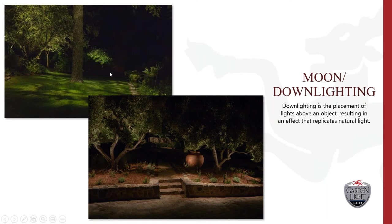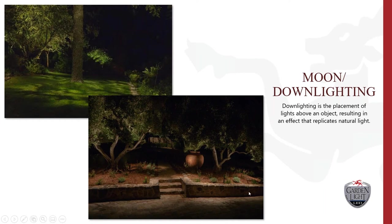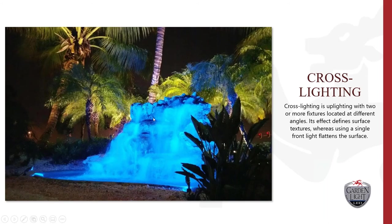When choosing a tree for downlighting, pick one with a lot of branches — not one with few. The higher up you are and the more low-lying branches there are, the more shadows you cascade down onto the turf or walkway. You can see how uplighting and downlighting out of a single tree can illuminate a whole area, make it safe to walk up stairs, and look absolutely beautiful — just a little bit brighter than a full moon effect.